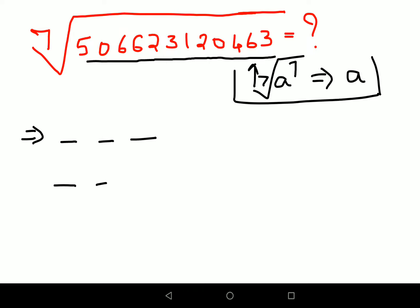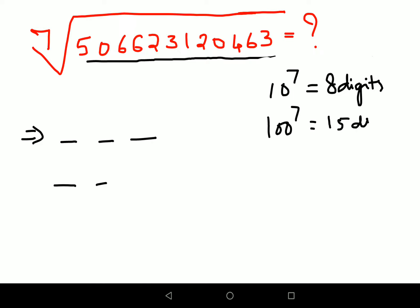We will first see that if we do 10 raised to 7, what I get is 1 and how many 0's? So 6 0's. So total how many digits are we looking at? We are getting 8 digits. Then we do 100 raised to 7, that gets you 1 and 14 digits, 14 0's, that gets you 15 digits.